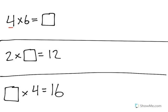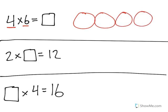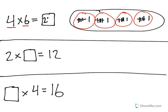This multiplication problem means 4 groups of 6 equals blank. So all I have to do is draw 4 groups, make sure I put 6 in each group, and then see how many I have total. And when I do that, I can find out that 4 times 6 is equal to a total of 24.